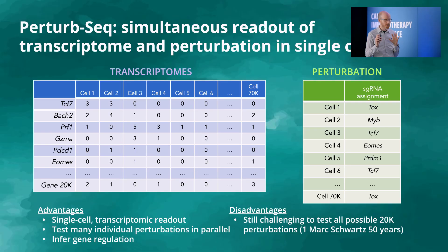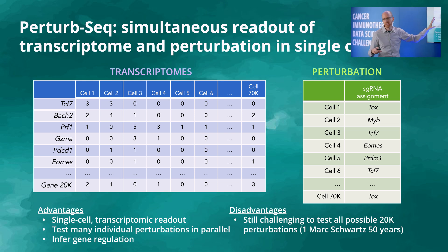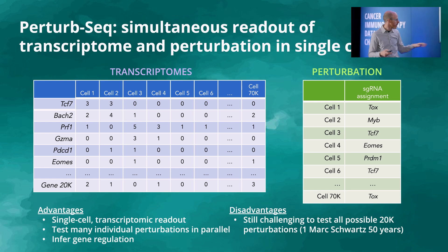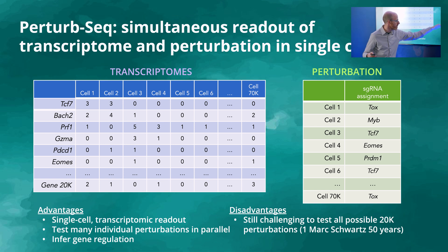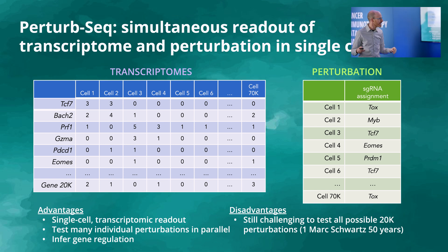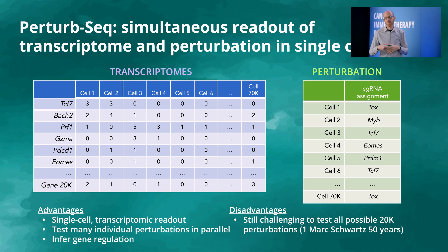The advantages of PerturbSeq are many. This is a single-cell readout, so we can read the effects of perturbations in thousands and thousands of cells — that's really incredible. We can test many individual perturbations in parallel, as you see here with many different perturbations being characterized. And because we have the perturbation and the resulting gene expression in the same cell, that allows us to think about causality and inferring gene regulation.